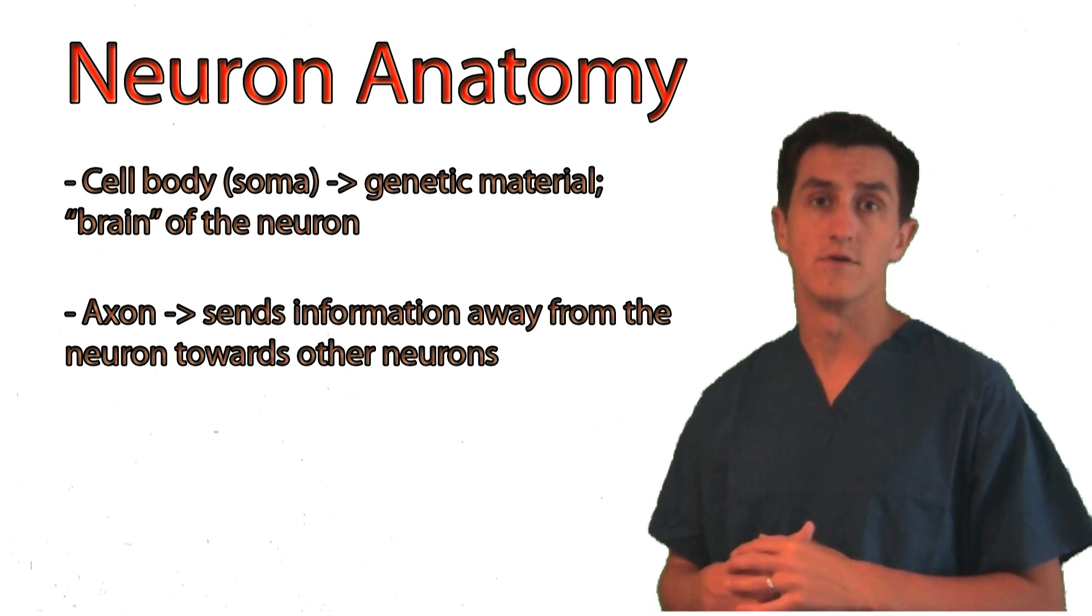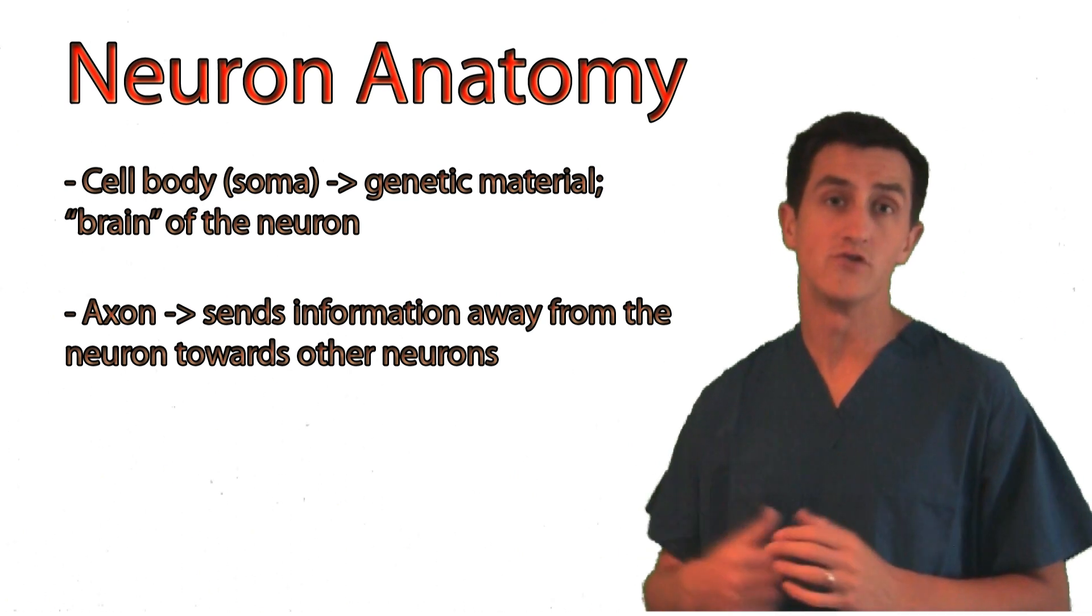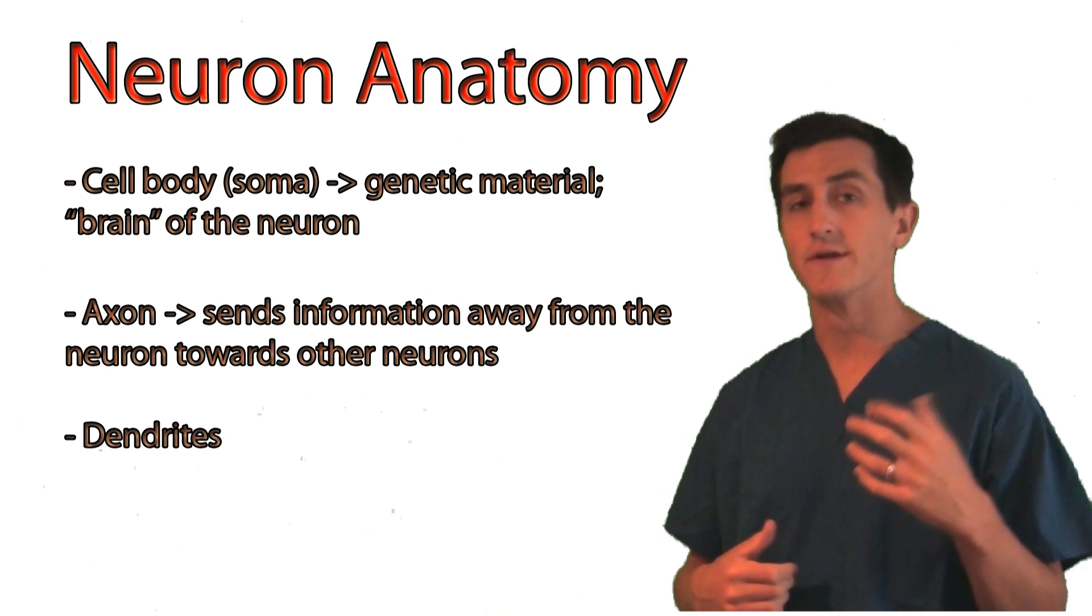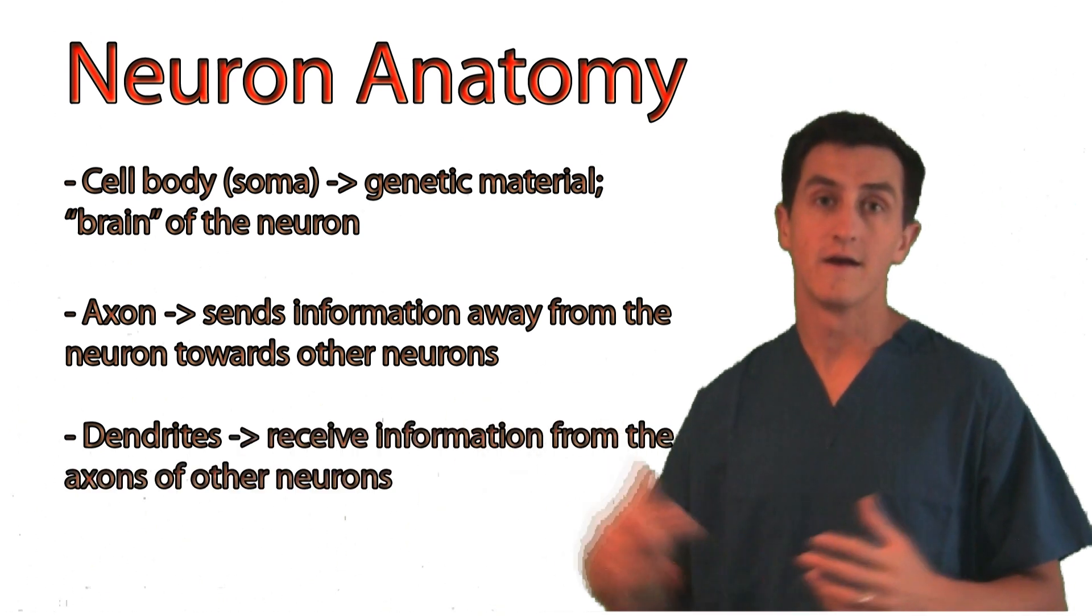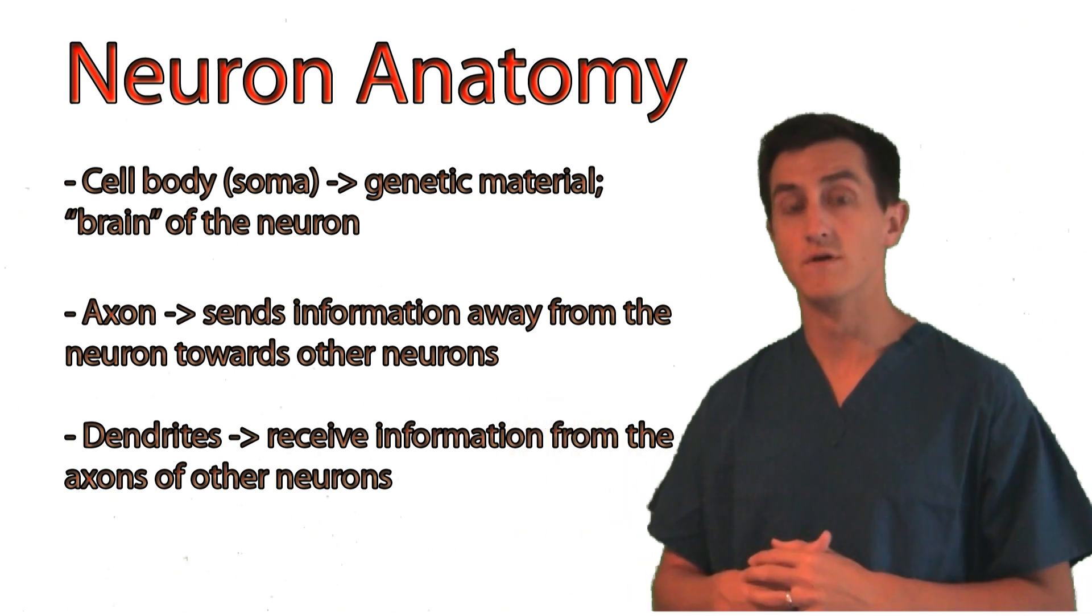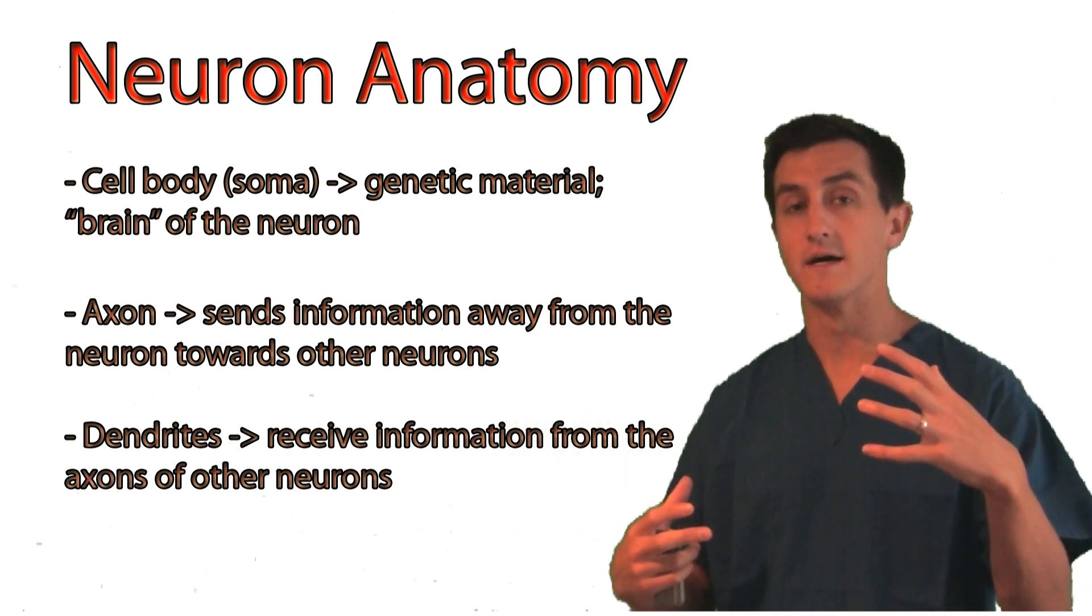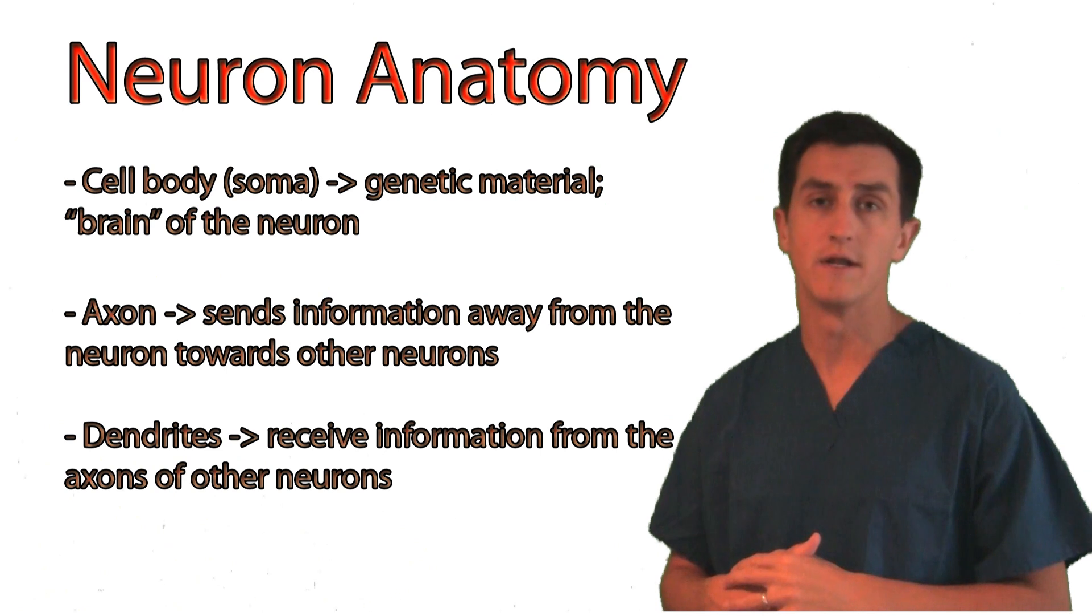Off of the other end of the neuron are processes known as dendrites. Dendrites are important in receiving information from other neurons' axons that basically connect to those dendrites and allow the adjacent neurons to communicate with one another.